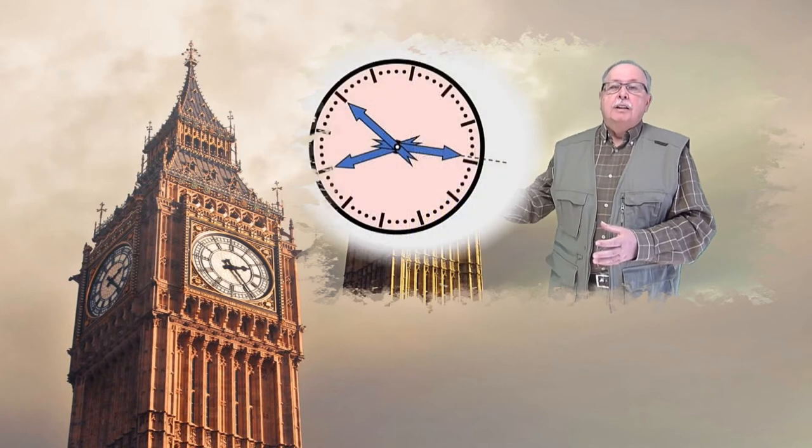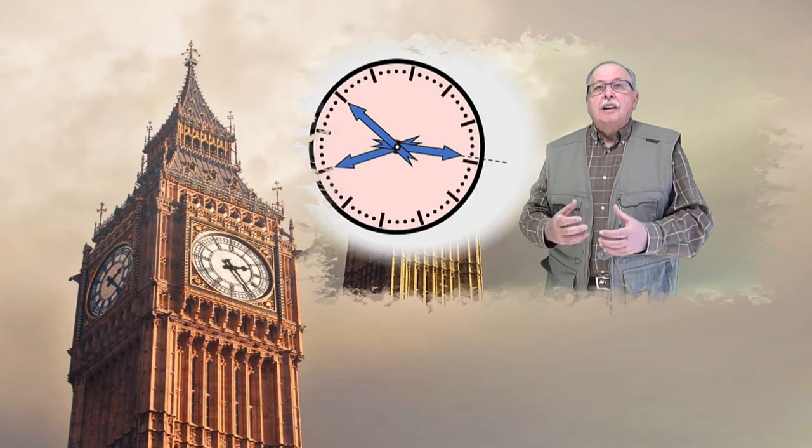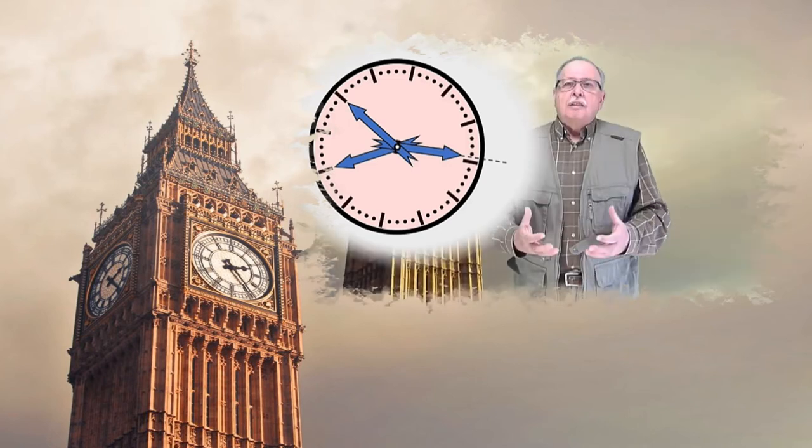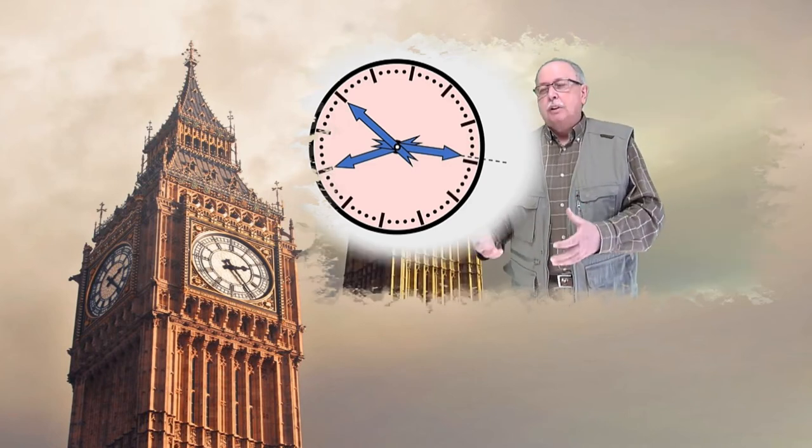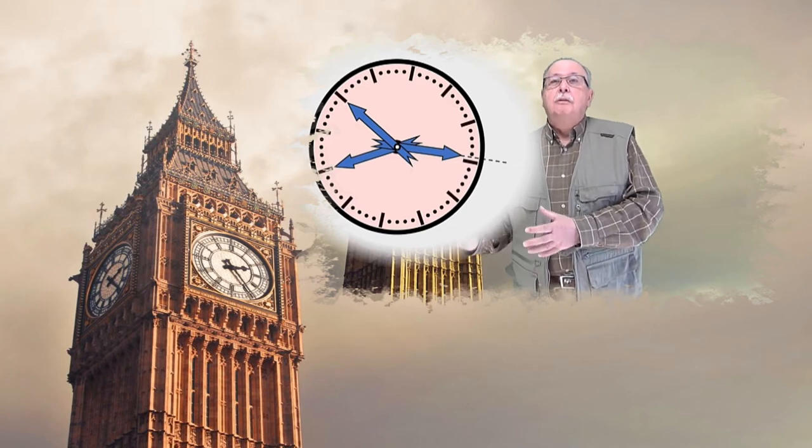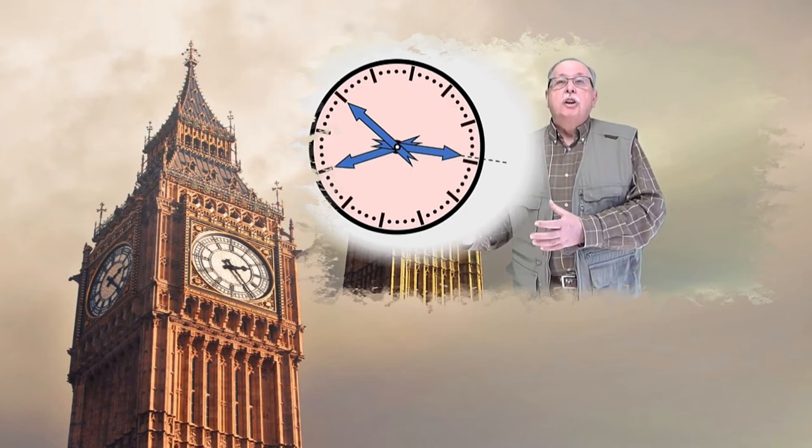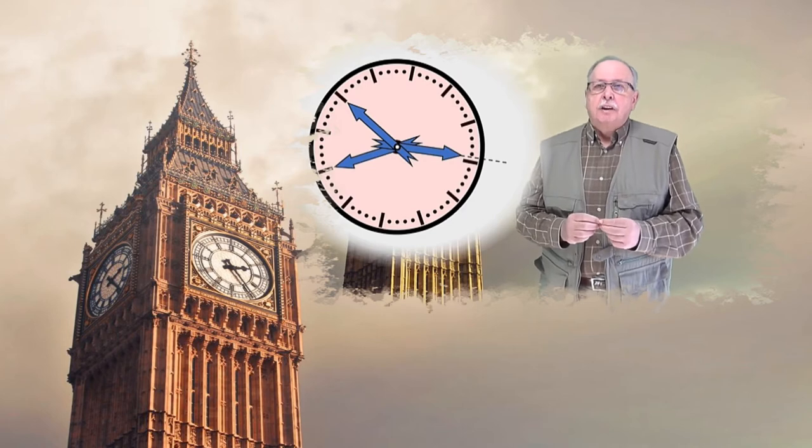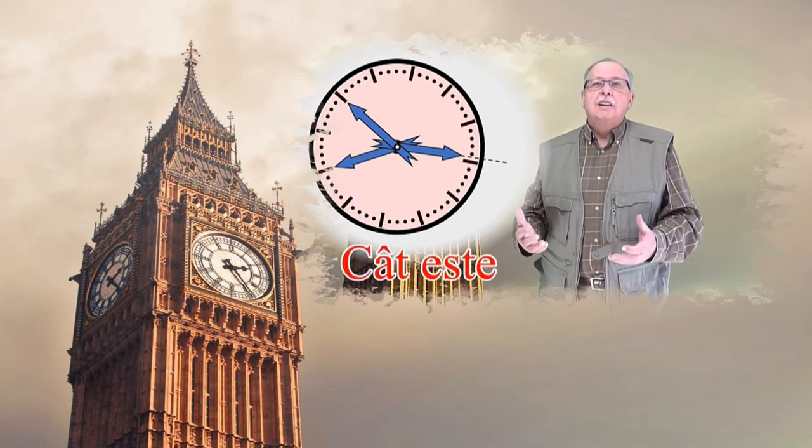Să vedem acum a treia întrebare. Avem din nou un ceas cu cadran, pe care sunt diviziuni, dar nu sunt trecute orele, și acest ceas s-a rostogolit și el, așa că nu știm unde este ora douăsprezece. Ceasul are trei limbi, orarul, minutarul și secundarul, dar ele sunt la fel. Au aceeași lungime și aceeași formă. Presupunând din nou că limbile ceasului sunt exact acolo unde trebuie să fie, vă întreb din nou cât este ceasul. Să revedem ceasul. Am notat limbile ceasului cu A, B, respectiv C, ca să fie mai ușor de formulat explicația.